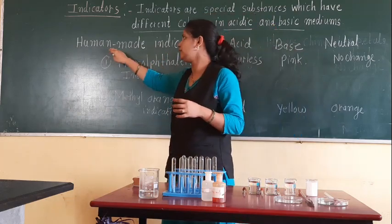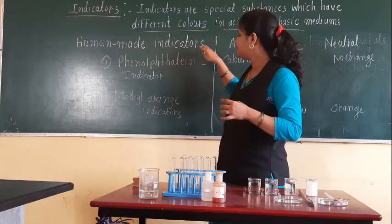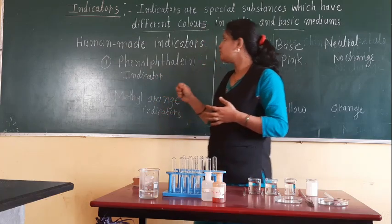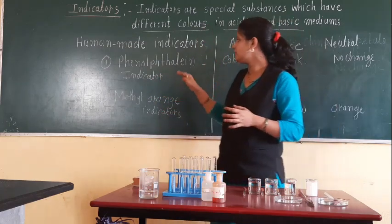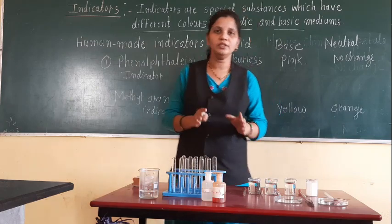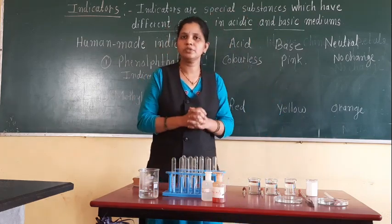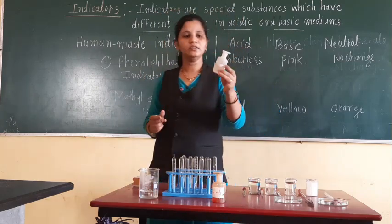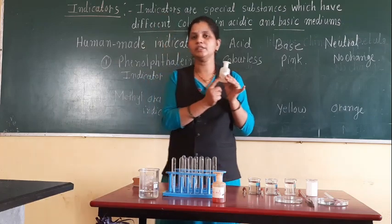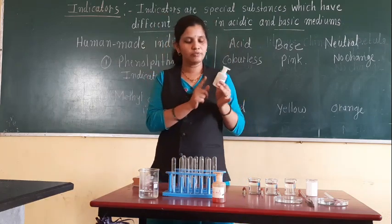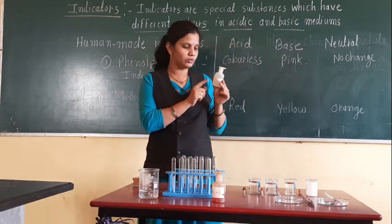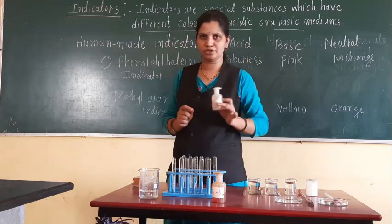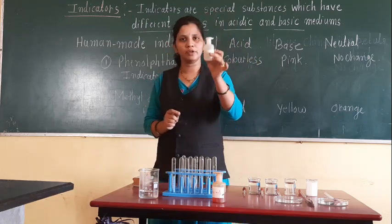Human-made means these indicators are specially made by humans. The first indicator name is phenolphthalein indicator. It is most commonly used in laboratories. Here I have that indicator. As you can see, it is labeled phenolphthalein indicator. Phenolphthalein is dissolved in alcohol to make this indicator as a solution.